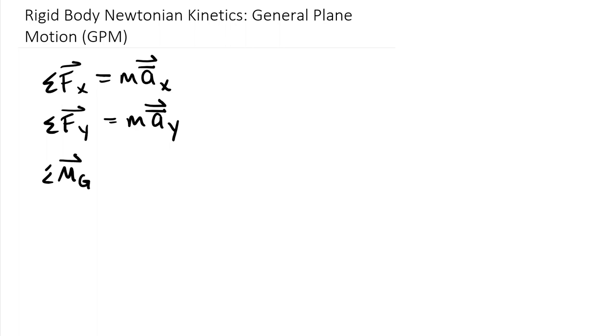The third equation is our moment equation. We have an option: either sum moments about the centroid, giving sum of moments about point G equals I-bar times angular acceleration alpha, or sum about a non-centroidal point.